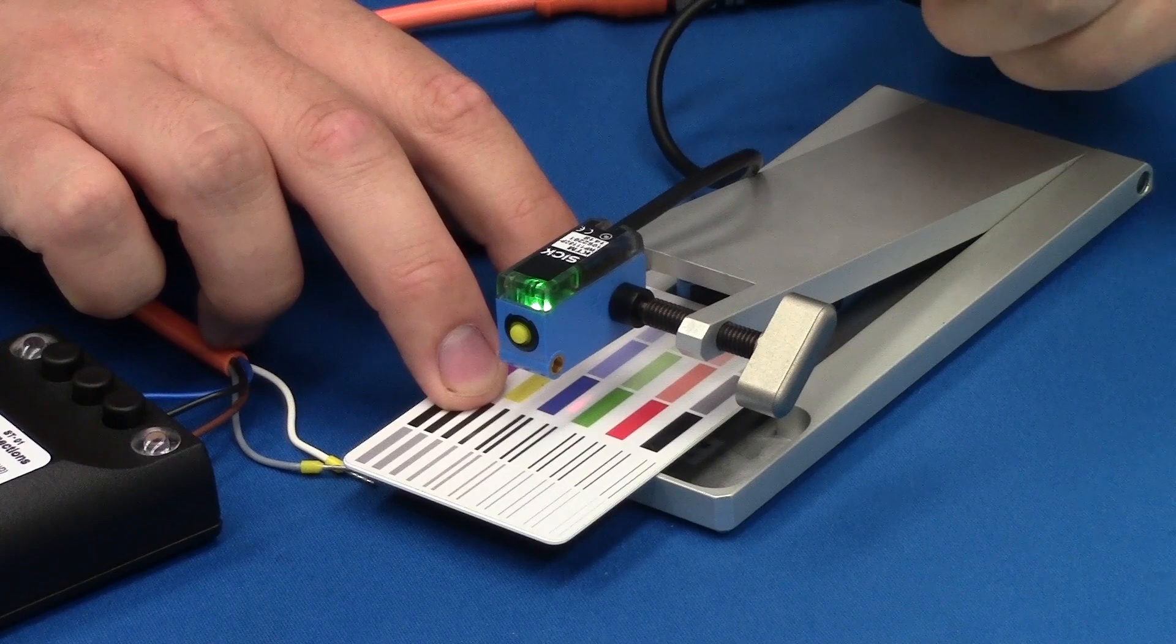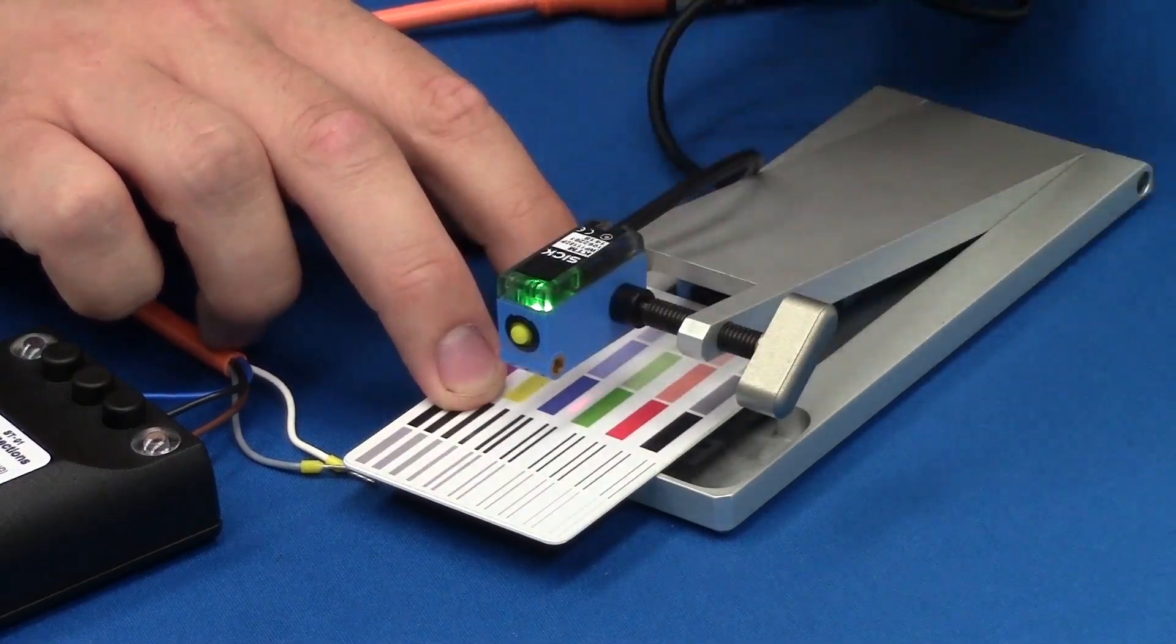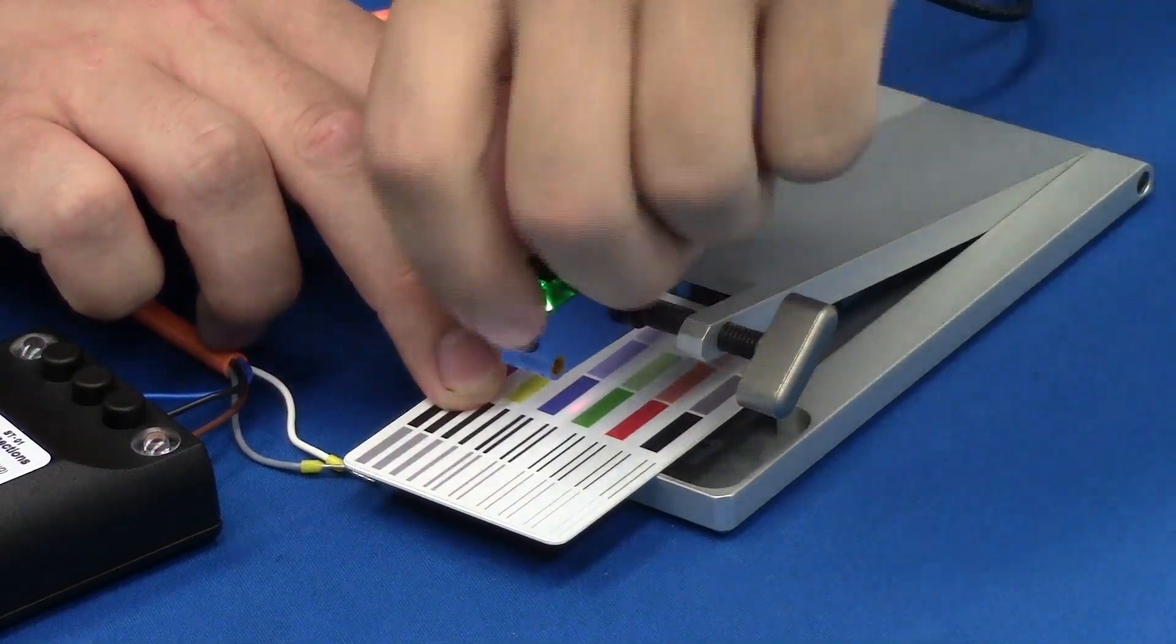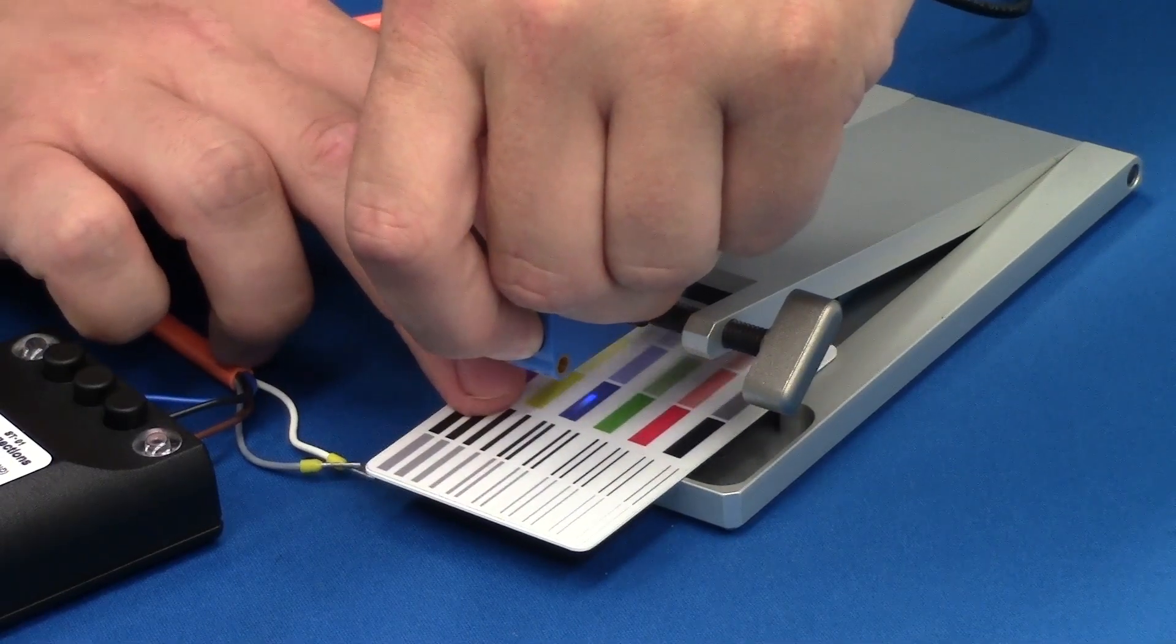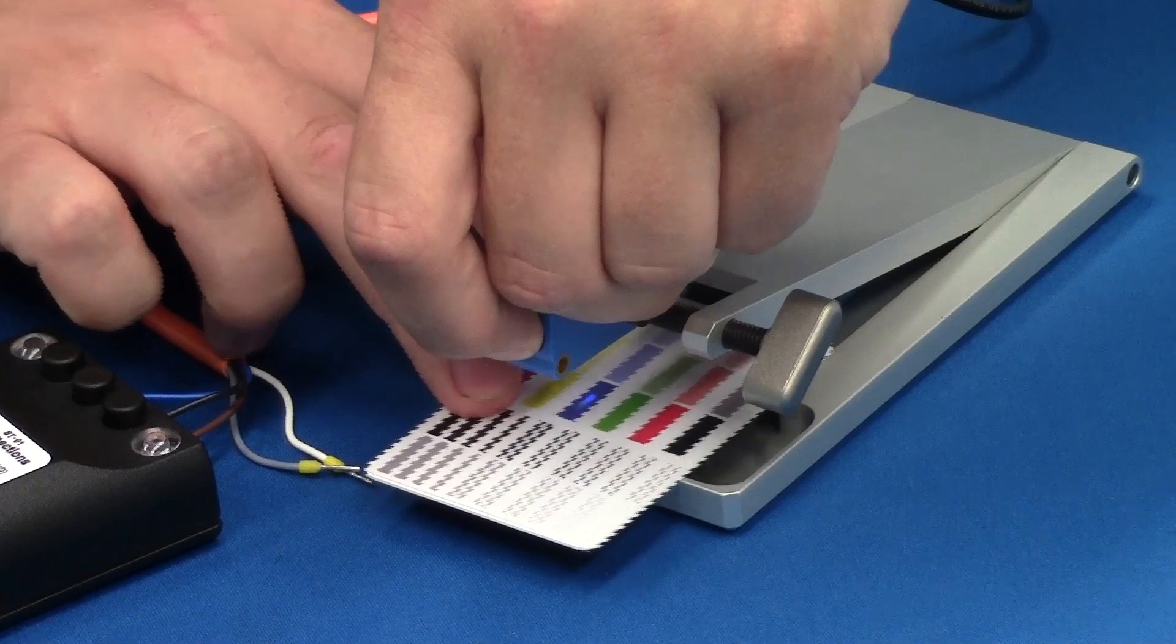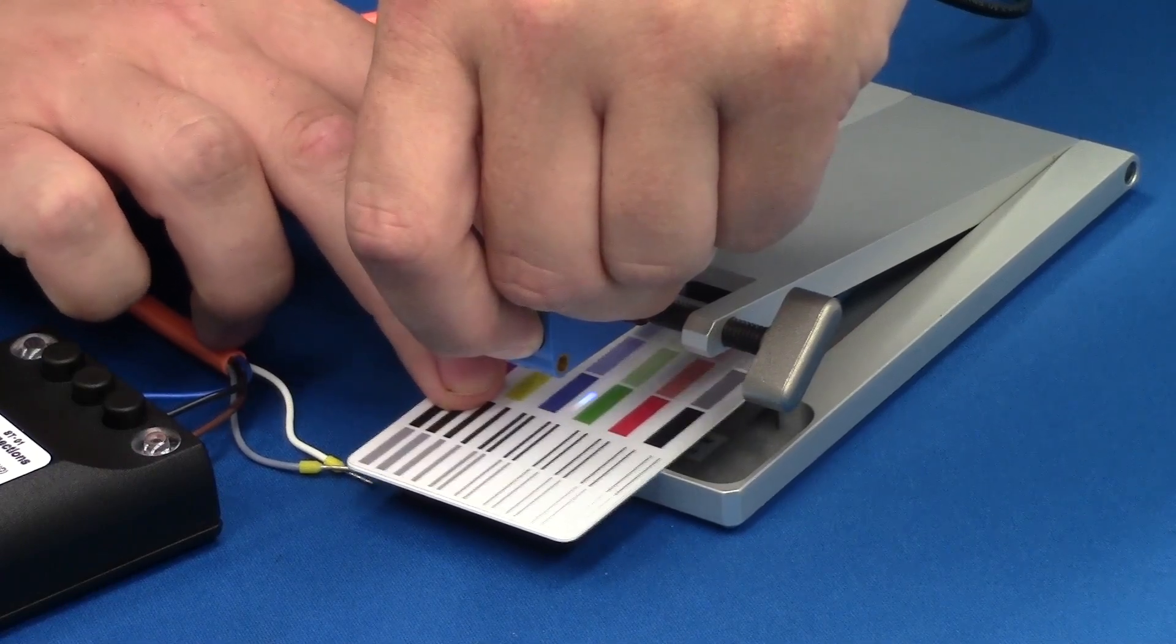To do a dynamic teach, what we do is we push and hold the teach button and then we move a few marks past the sensor. As we push and hold the teach button, you'll see a tri-colored LED. That means we're in teach mode and we can move back and forth.